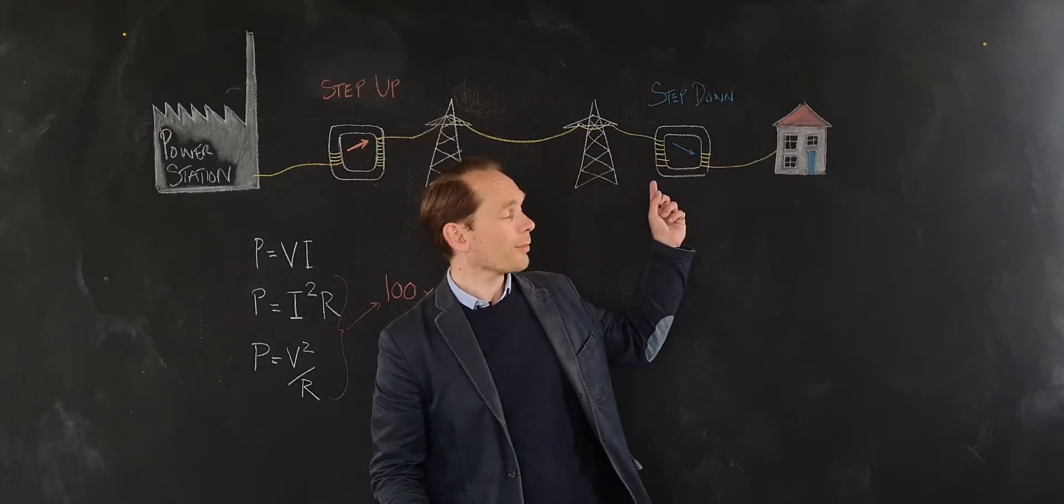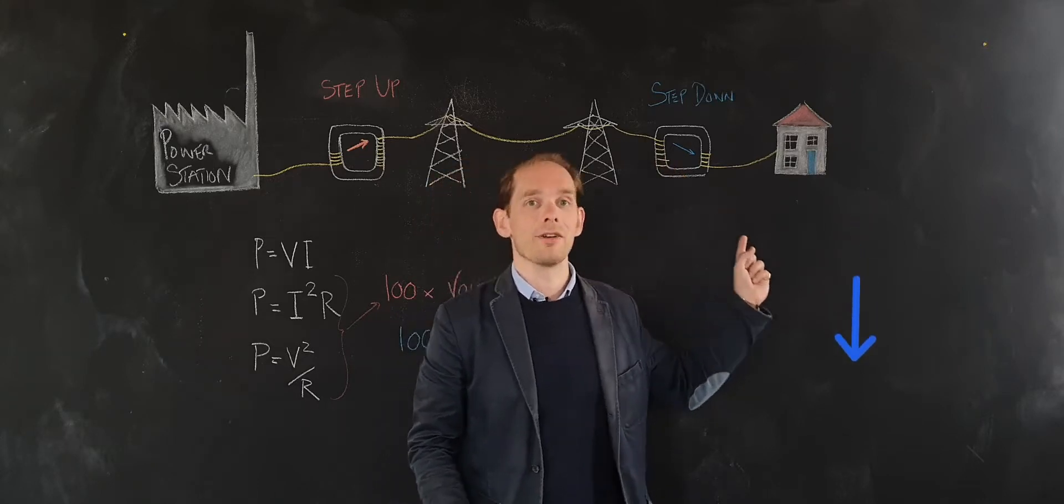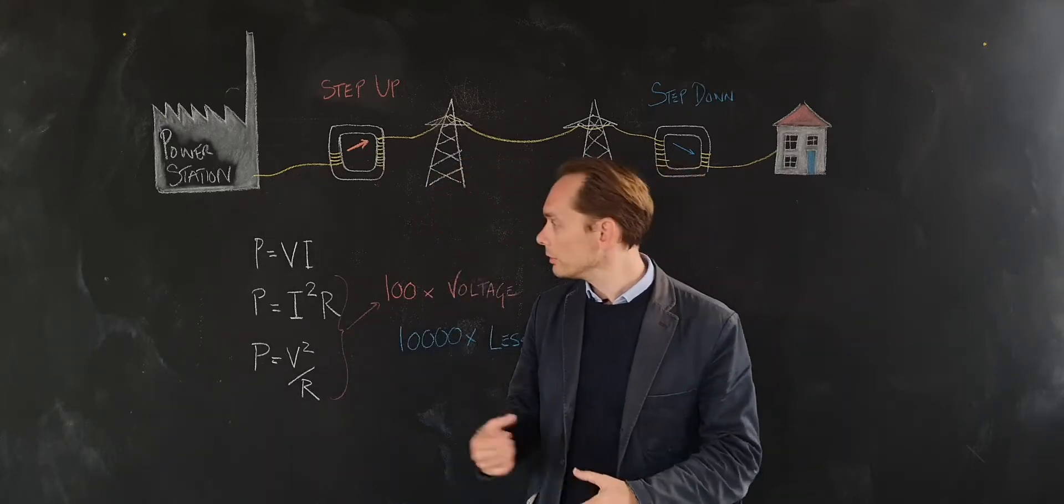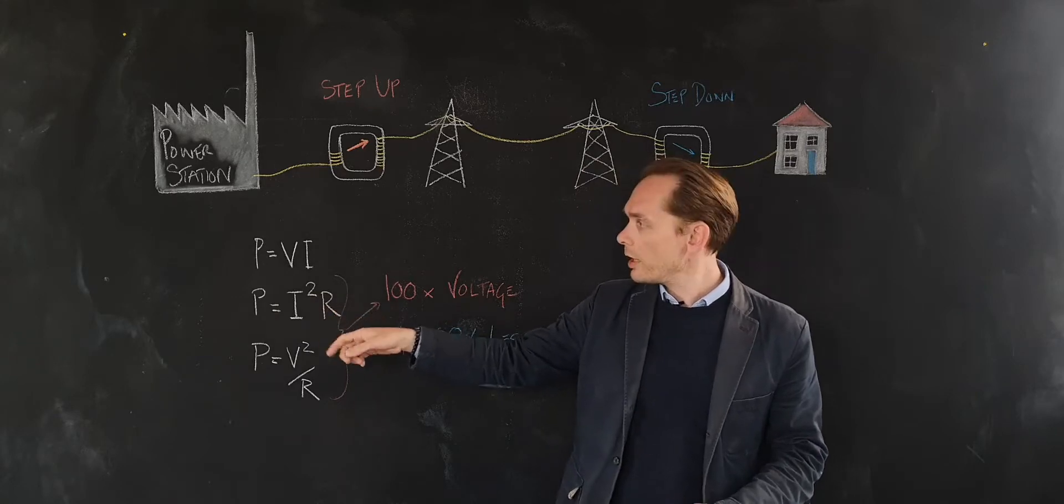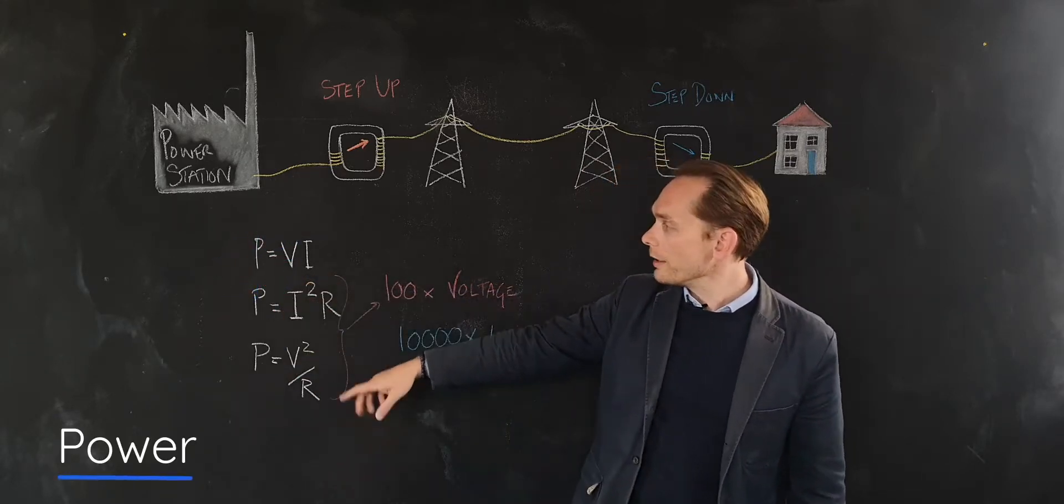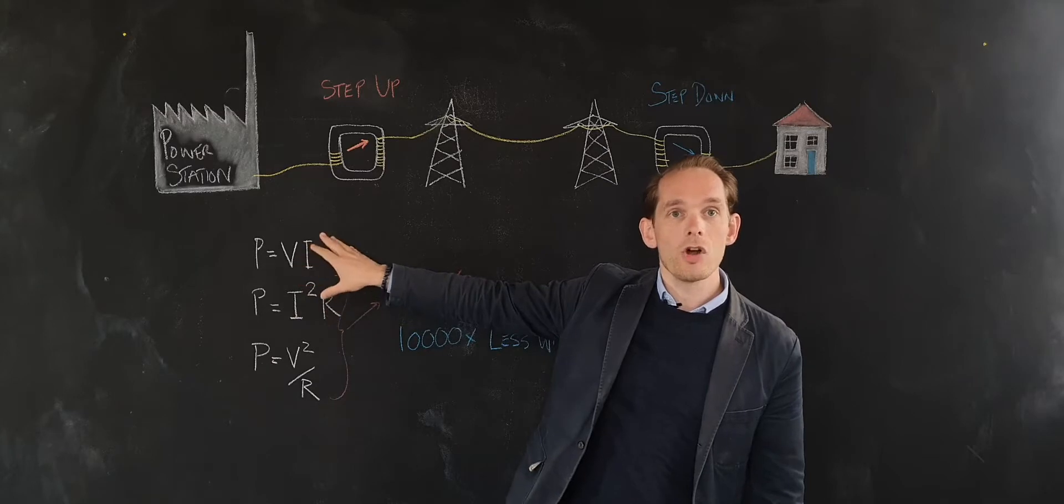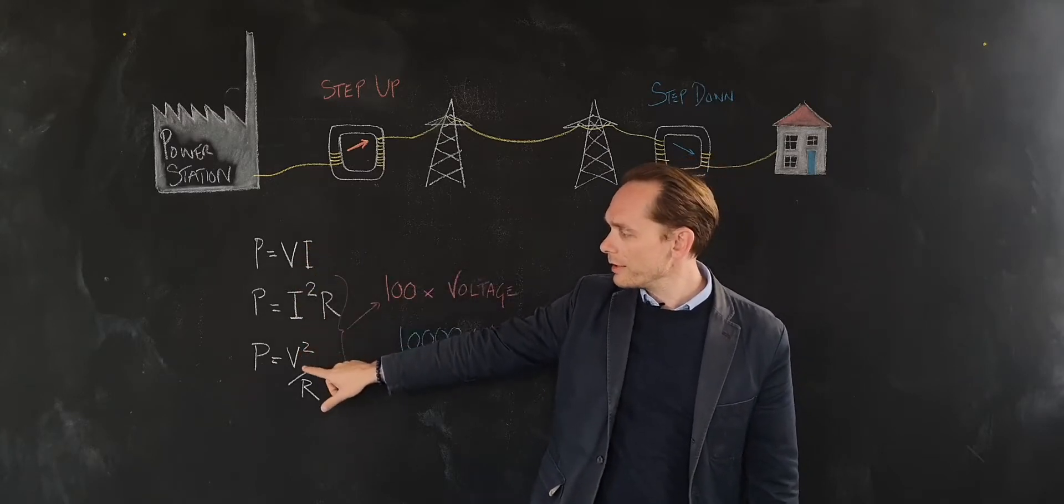Likewise, more turns on the primary coil means a step-down in voltage. Why bother? Well, the energy you lose in a wire is related to power, and if you substitute Ohm's law into this equation, you get these versions.